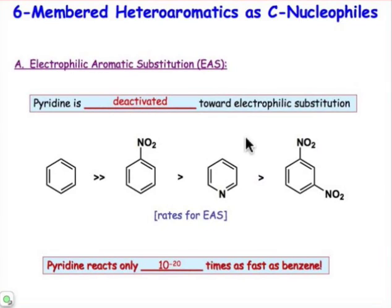Remember that in electrophilic aromatic substitution, the π system serves as a nucleophilic source of electrons. That's the highest occupied molecular orbital. And if that highest occupied molecular orbital is actually low in energy, then it's not going to be a very potent nucleophile, and reactions like electrophilic aromatic substitution will be very slow.